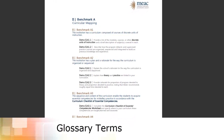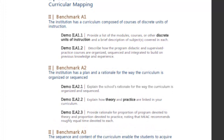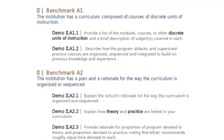Glossary Terms: throughout the standards, you'll find words or phrases in bold type. These are defined in the Glossary section of the MEEC Accreditation Handbook, which you can find on the MEEC website. For example, under Demonstration Standard 2, A1-1, you'll see the words 'discrete units of instruction' in bold.